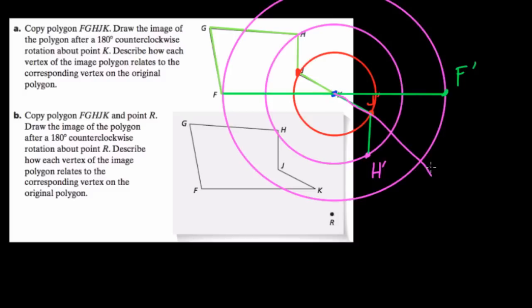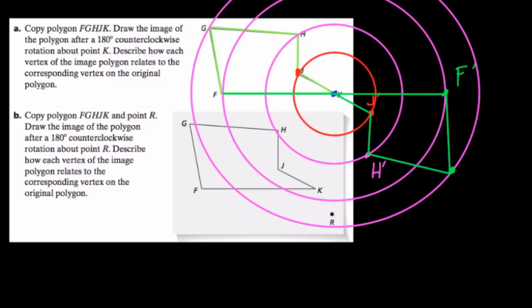That's point G. So one way to do this is set up a circle from the center K to G, and then follow 180 degrees along that circle. But if that's overwhelming, just draw a straight line from G through K to the other side here. Because a rotation of 180 degrees will form that straight line. So it'll be over here. And this is now G prime.